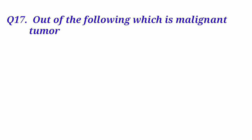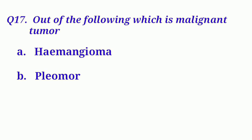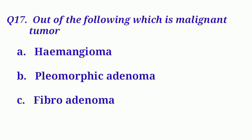Our next question is: Out of the following, which is a malignant tumor? Option A: Hemangioma. Option B: Pleomorphic adenoma. Option C: Fibroadenoma. And Option D: Lymphoma.